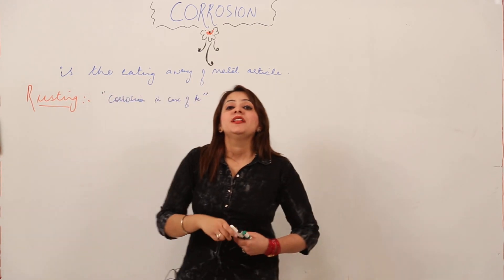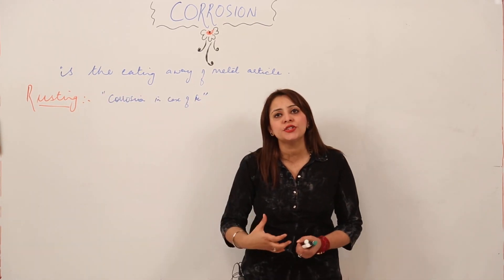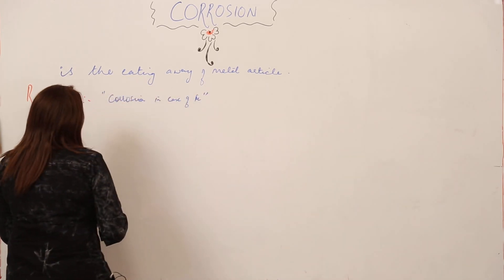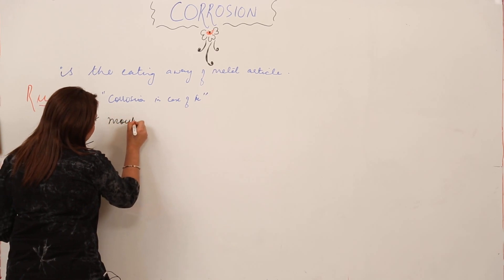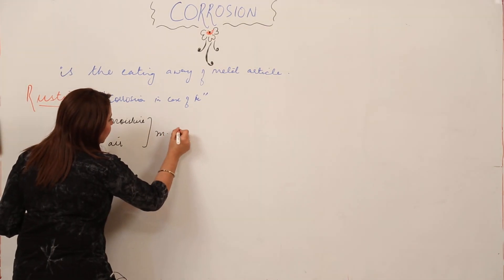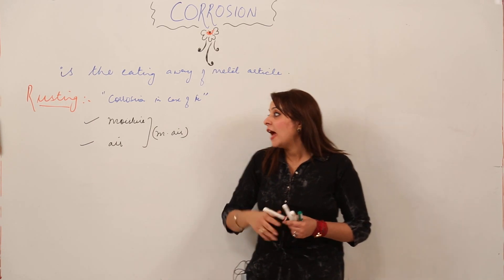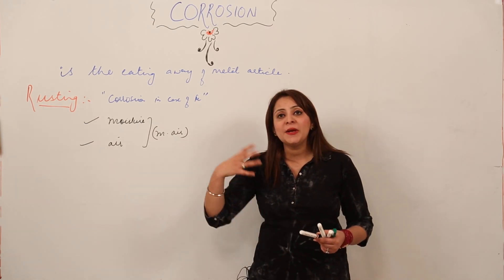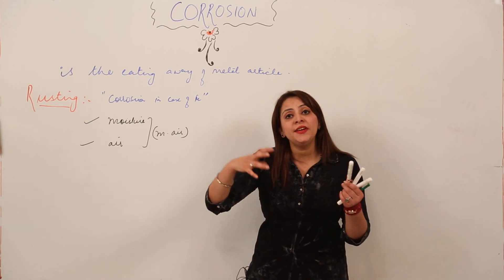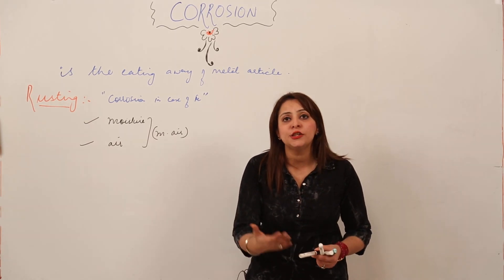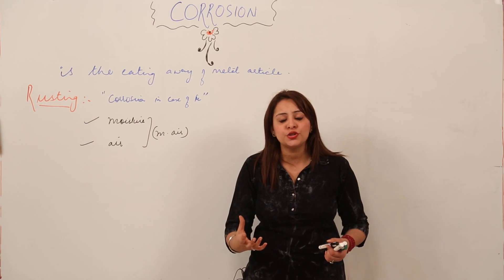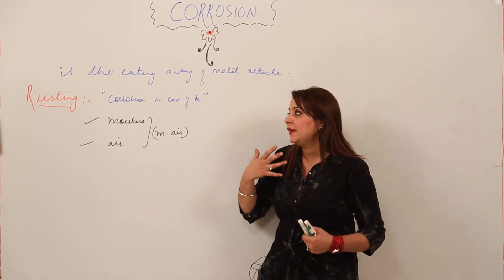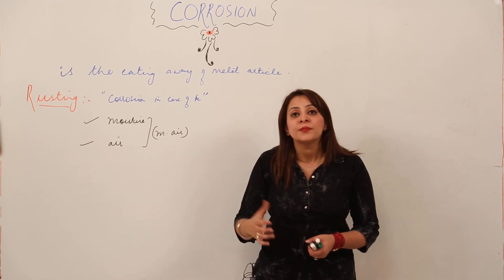Rusting does not occur on its own — there are certain conditions under which rusting takes place. Rusting takes place under the condition of moisture and air, so moist air leads to the occurrence of rusting. Similarly, corrosion also requires specific gases or substances present in air that cause the eating away of the metal article. The factors that lead to corrosion are different for different metals. For rusting, it is moist air that causes the deposition of a brown-colored layer on the iron article — that is rust.